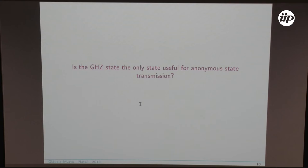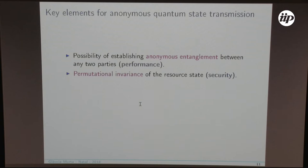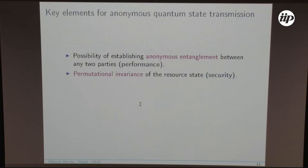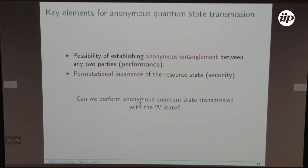The first question we asked is: is the GHZ state the only state that can be used for this task? For a resource state to be useful, we need to be able to generate anonymous entanglement between any two parties, and the state should be permutation invariant — otherwise parties taking different actions could reveal who the sender or receiver is. One state that is maximally entangled and permutation invariant is the W state. Can we perform anonymous quantum state transfer with the W state?